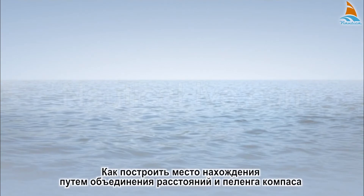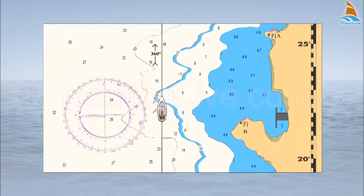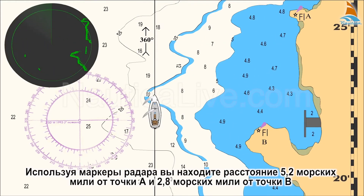This is how you plot a fixed position combining distances and compass bearings. Using the radar's range marker, you obtain a distance of 5.2 nautical miles from point A and 2.8 nautical miles from point B.